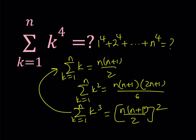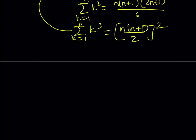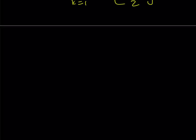But we're going to be finding something that's not very common. In order to be able to find the sum of the fourth powers, I'm going to be using a quintic polynomial. So I'm going to start with something like this: k plus 1 to the fifth power, and I'm going to subtract k to the fifth power from it. So let's go ahead and use the binomial theorem.